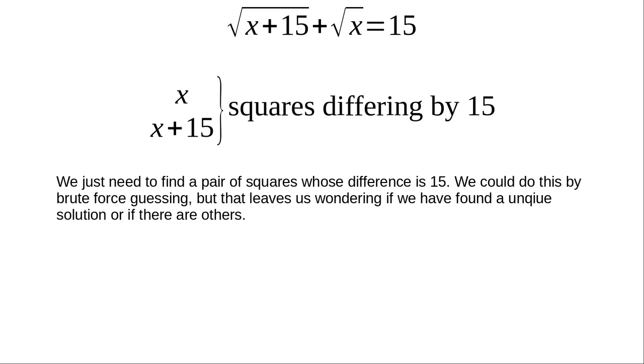Now, the other way we can do this is we can use an observation. We know that x plus 15 and x must be squares. That is, that you must be able to take a square root of them. So, and that they must differ by 15 because of the plus 15 under the one square root sign. And we know that the square roots themselves add up to 15.